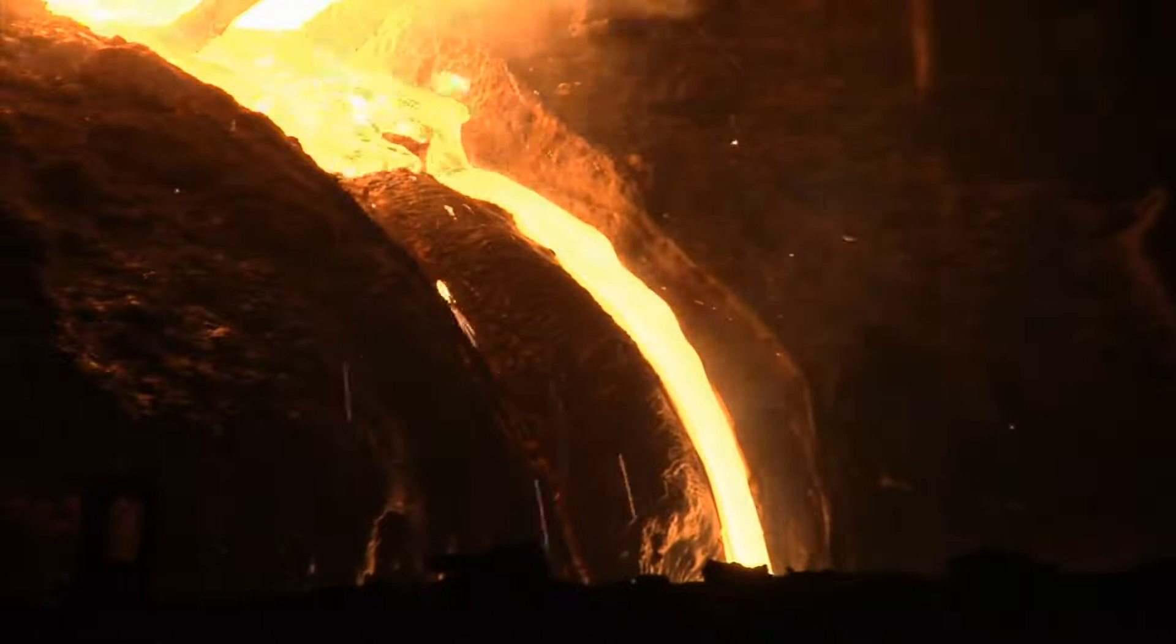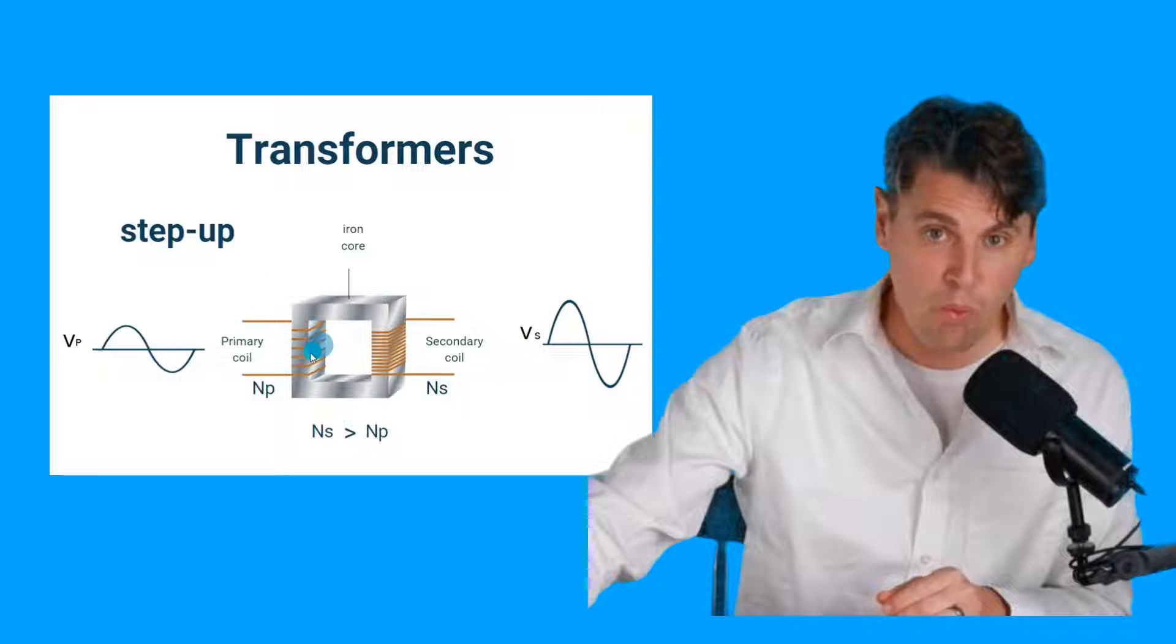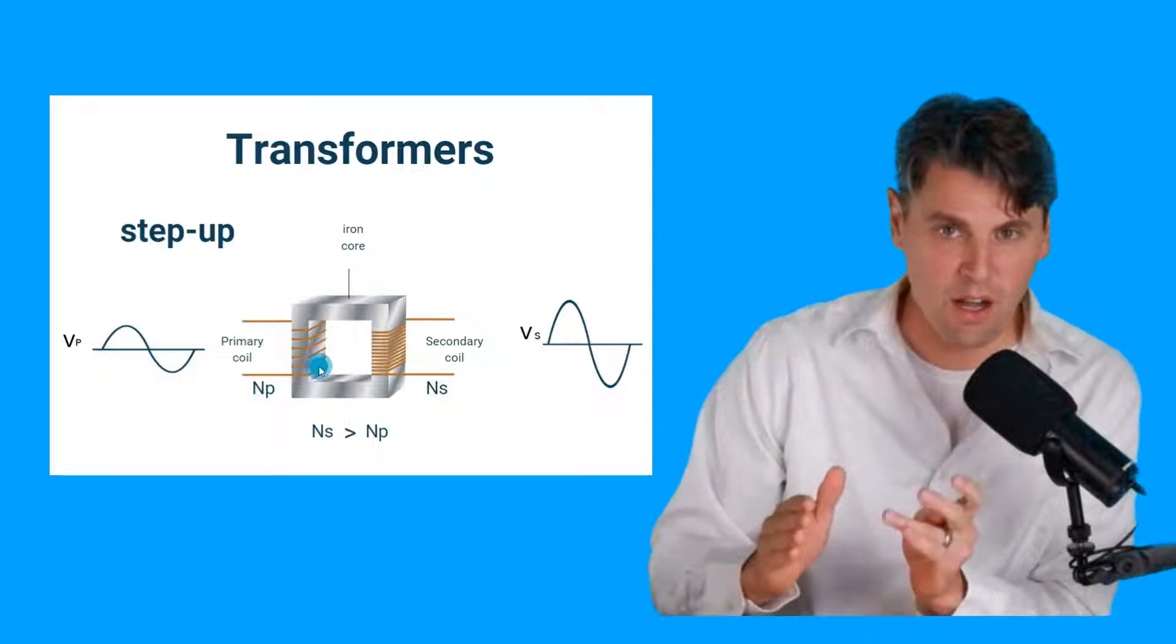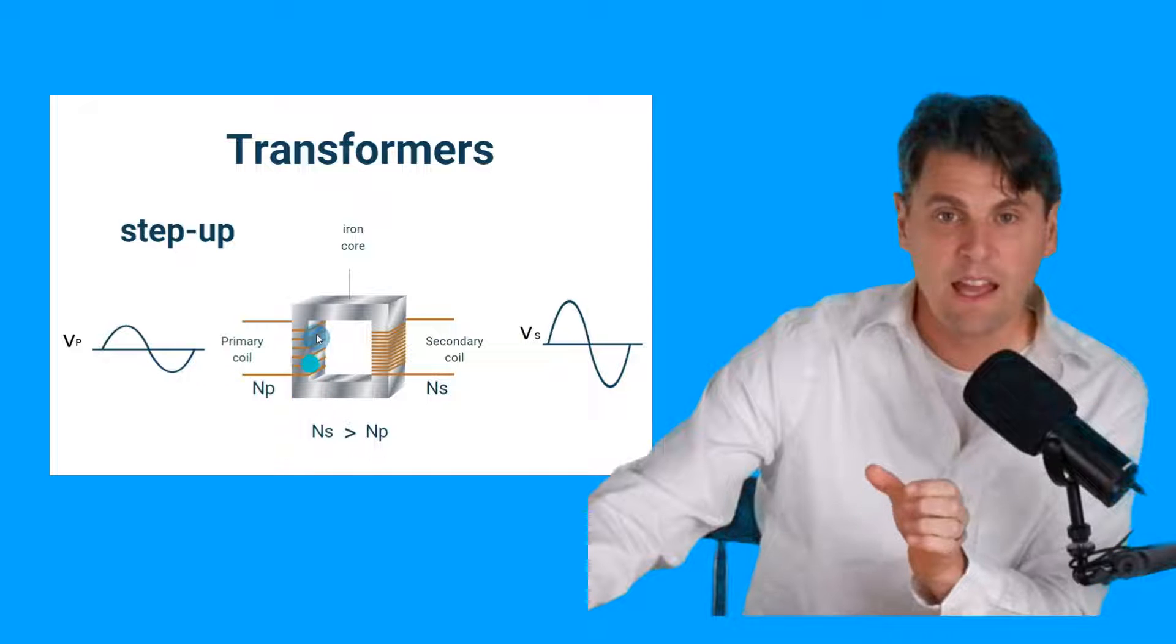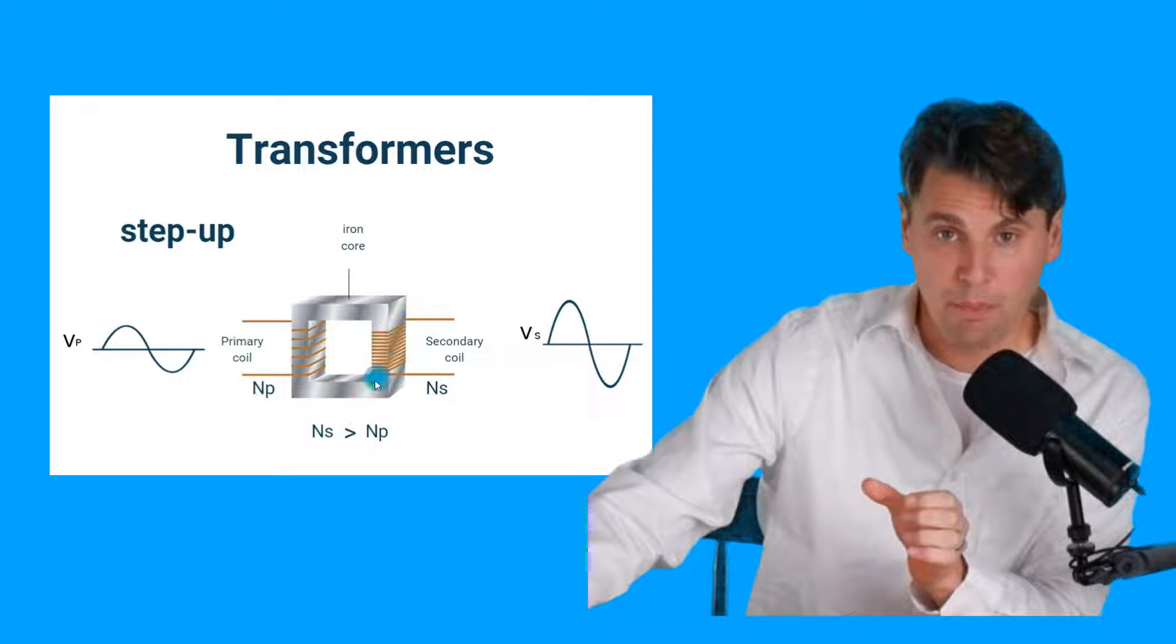So if you take an iron core, we will have a wire loop. We'll have an oscillating current coming in that will induce a magnetic field because of the change in that current loop. That magnetic field then will be picked up inside of this iron core.